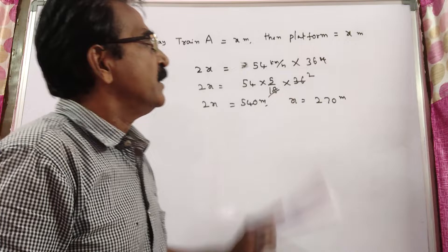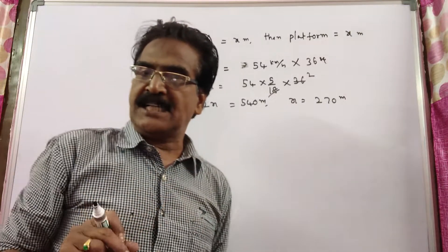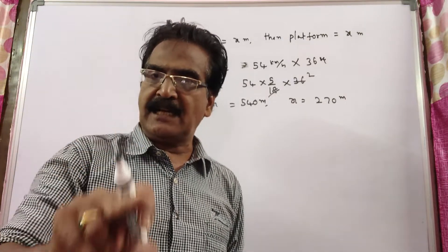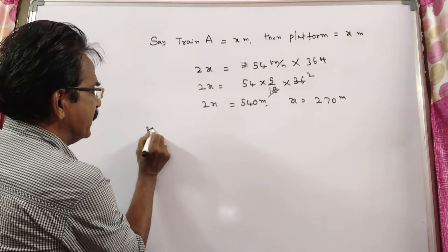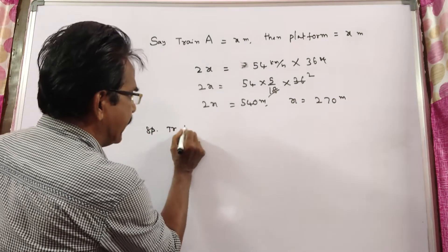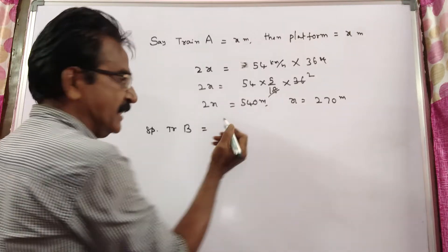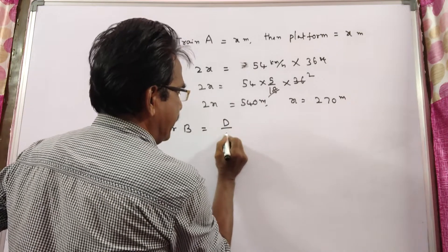Now from the second statement, we have to find the speed of train B. Speed is equal to distance by time.